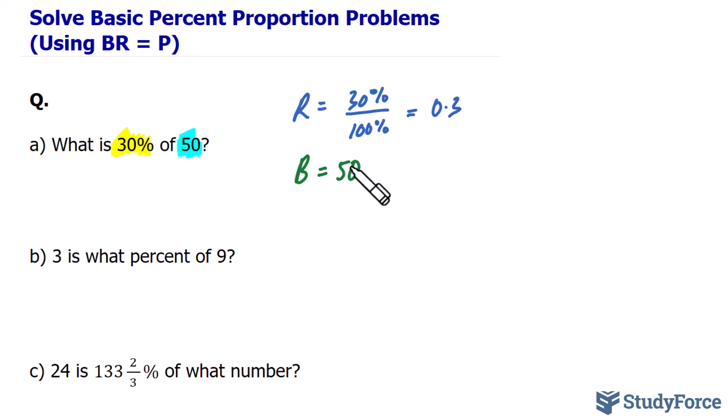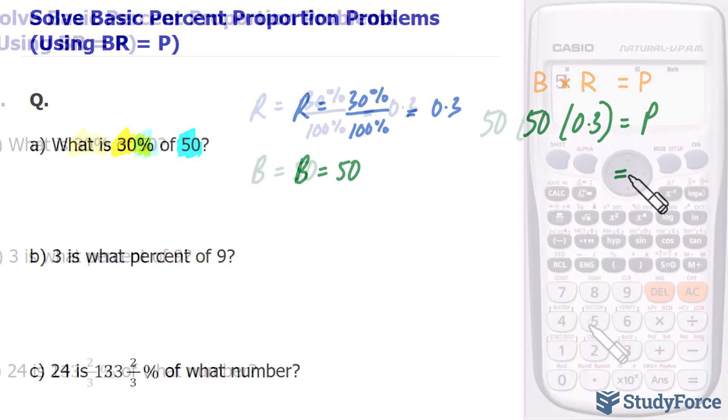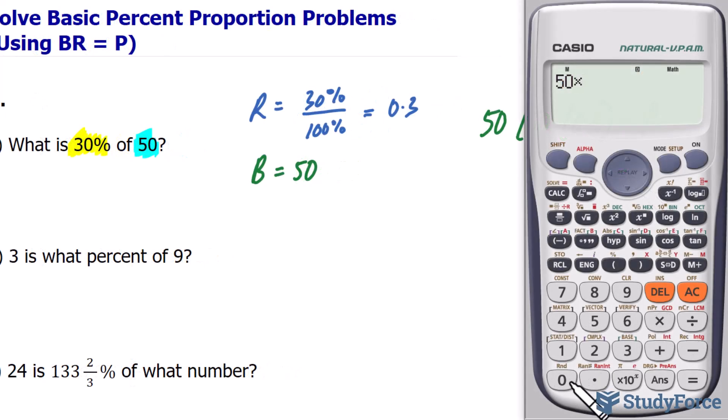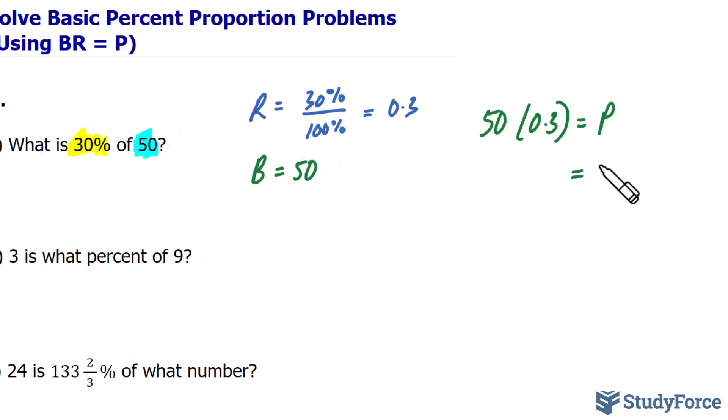So our formula is B times R equals P. We have our base value of 50, and if we multiply it by 0.3, we'll end up with the portion of 50 that is 30%. So using our calculator, 50 times 0.3 makes 15. Therefore, 30% of 50 is 15.